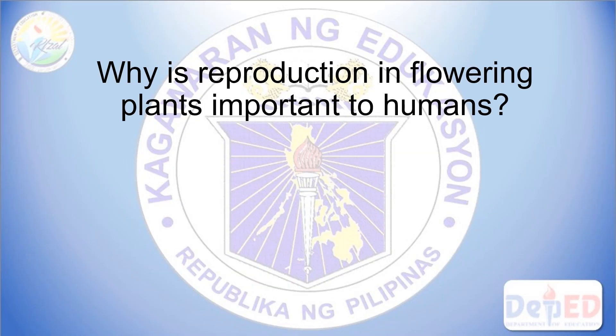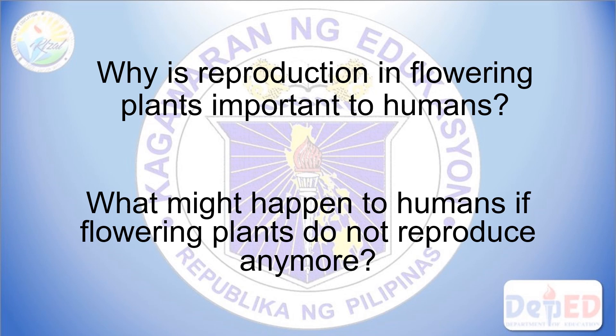Why is reproduction in flowering plants important to you? Reproduction in flowering plants is very important not only to humans but also to other animals. Just imagine the world without flowering plants — it would be a dull world. They serve as the major source of food for humans and animals and provide natural medicines and much more. If reproduction doesn't take place, their kinds will not exist anymore. If flowering plants do not reproduce, humans will be hungry because we get some of our food supply from these plants.